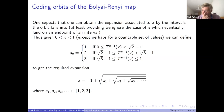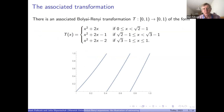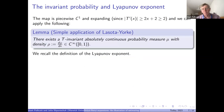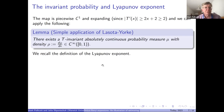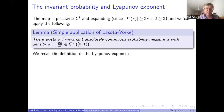We have a nice expanding map of the interval to itself, so in particular it will have a nice invariant measure. Lebesgue measure in general won't be invariant, but there will be a unique invariant probability measure mu which is absolutely continuous, with a density rho that is C-infinity — or at least piecewise C-infinity on each interval. So we have the transformation and an invariant measure for it.